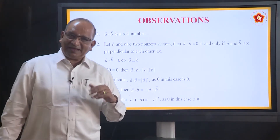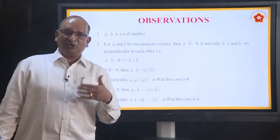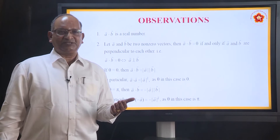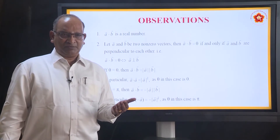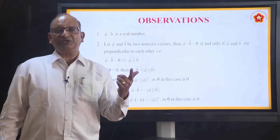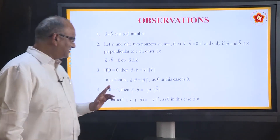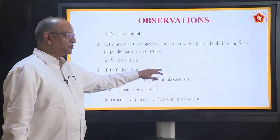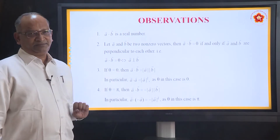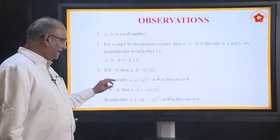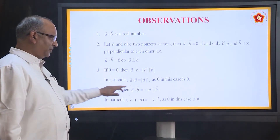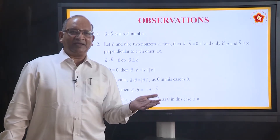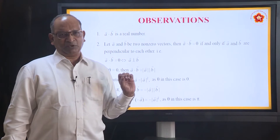What happens if the angle is zero? Suppose both are coinciding or both are parallel to each other. We know that cos 0 is equal to 1. So as a result, modulus A dot B is equal to AB because cos 0 becomes 1. What happens if theta is 180 degrees? It will be minus. Why? Because cos pi, cos 180 degrees, is minus 1.